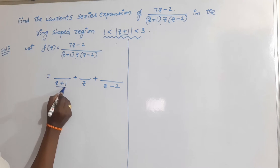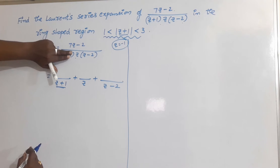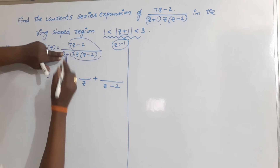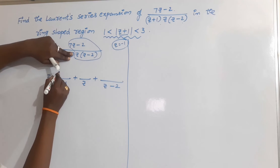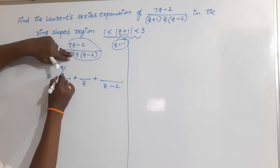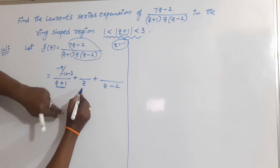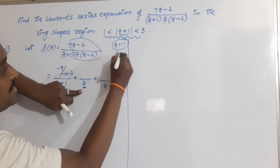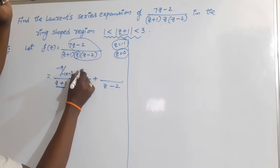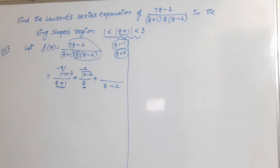For the numerator of (z + 1), the factor for z + 1 has root z = -1. Replace z = -1 in the function except at the (z + 1) term. You get 7(-1) - 2 = -9 in the numerator, and the denominator is (-1)(-1 - 2) = -3, so A = -9 / -3 = 3. For B, the factor z has root z = 0. Replace z = 0 in all remaining terms: (0 - 2) / [(0 + 1)(0 - 2)] = -2 / -2 = 1, so B = 1.